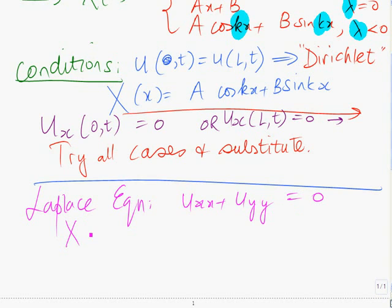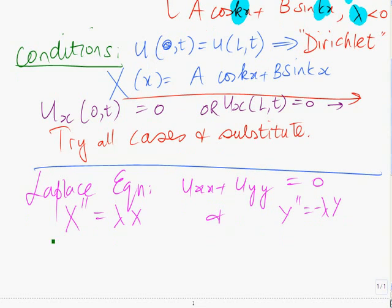So the x, you see, whenever you have a shape X double dash equals to lambda X, and you also have Y double dash equals to minus lambda Y, then you'll always have the three conditions to contend with. X will be equal to A cosh plus B sinh...